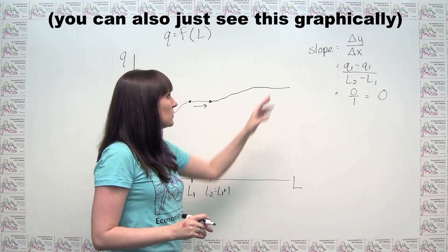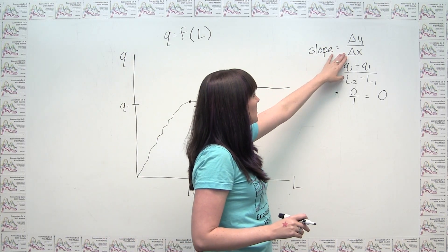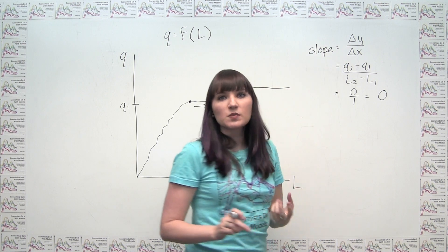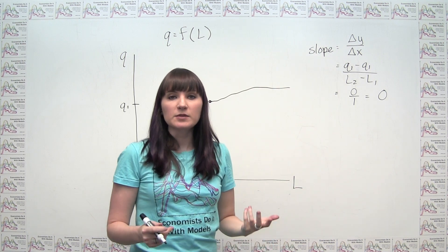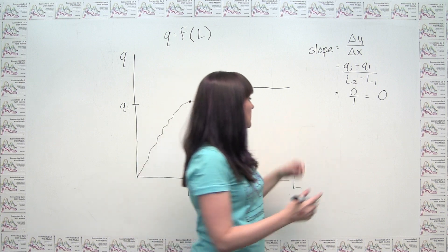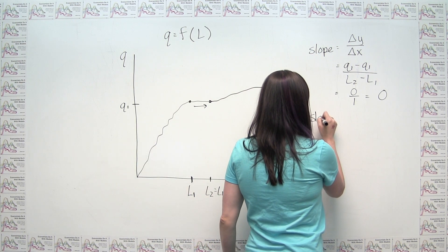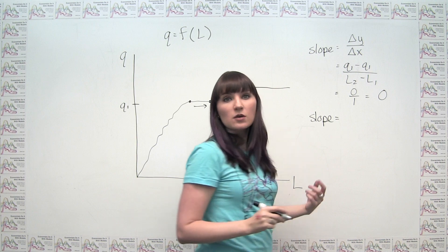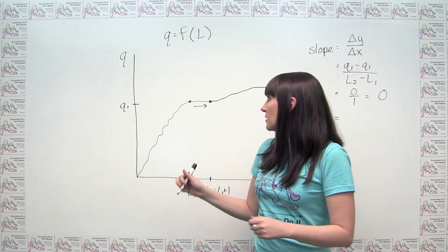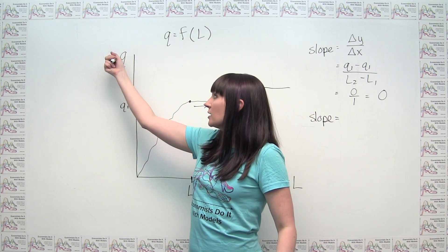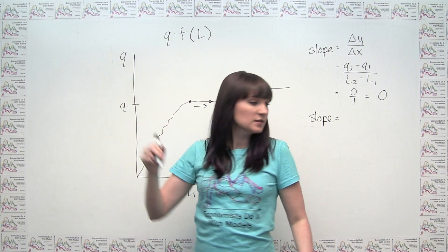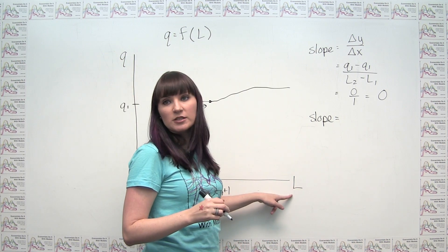Interestingly enough, we can see this slope corresponds to another concept that we learned about. Because here, I could just as easily have said, rather than using Y and X, I could say that this slope of the line is the change in Q divided by the change in L.